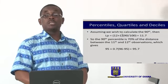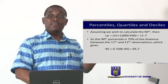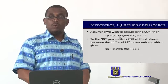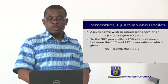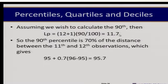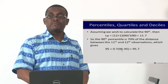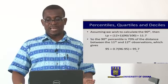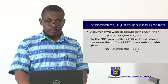To compute the 90th percentile (the 9th decile) from our 12-value data set, we locate its position: (12 + 1) × 90 / 100 = 11.7. This means the 90th percentile is 70% of the distance between the 11th and 12th observations. The 11th observation is 95 and the 12th is 96, so: 95 + 0.7 × (96 − 95) = 95.7. The interpretation: 90% of observations are less than 95.7, and 10% are greater than 95.7.